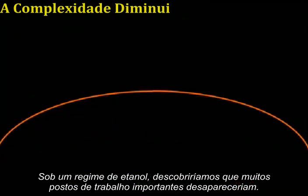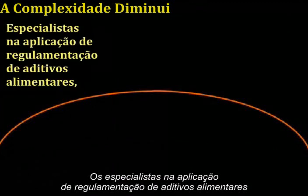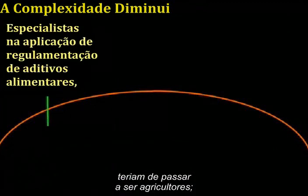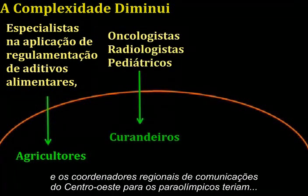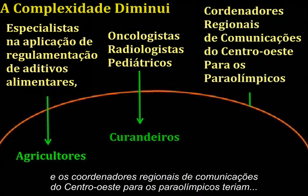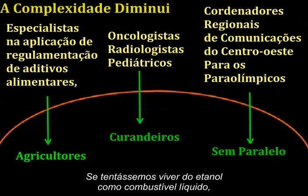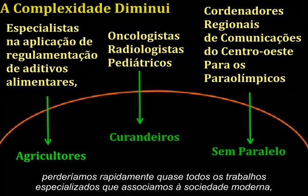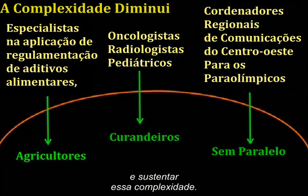And the reasons why have already been covered. With less surplus energy, less societal complexity is possible. Under an ethanol regime, we'd find that many cherished job positions would simply vanish — regulatory compliance specialists for food additives would have to revert to being farmers, pediatric radiological oncologists would become healers, and Midwest regional communications coordinators for Special Olympics would have to find something else to do. If we tried to live on ethanol as a liquid fuel, we'd quickly lose nearly all of the specialized jobs we associate with modern society, because there would be practically no surplus energy to support that complexity.